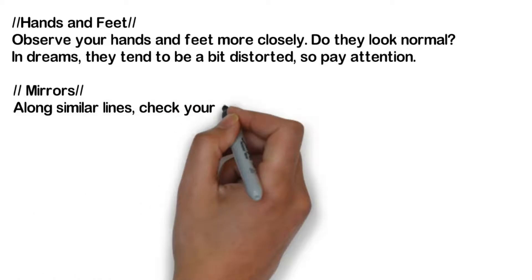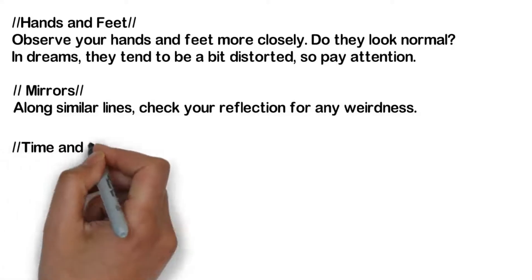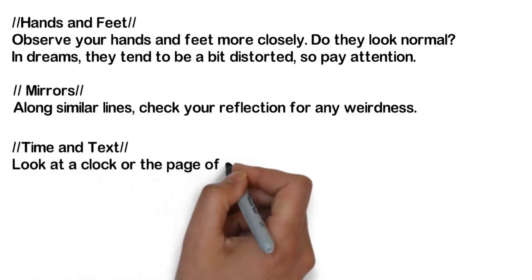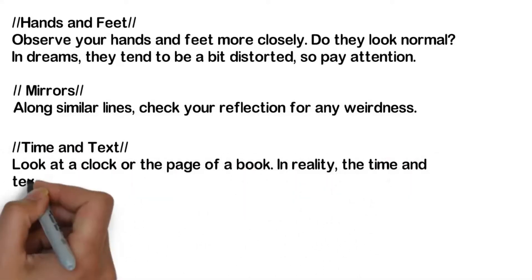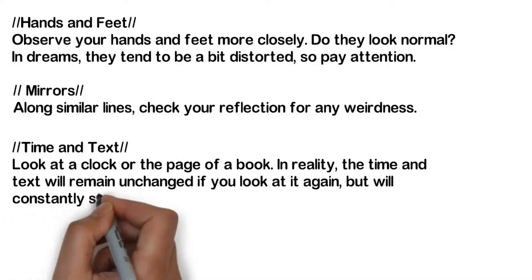Mirrors: along similar lines, check your reflection for any weirdness. Time and text: look at the clock or the page of a book. In reality, the time and text will remain unchanged, but if you look again it will constantly shift and vary in a dream.